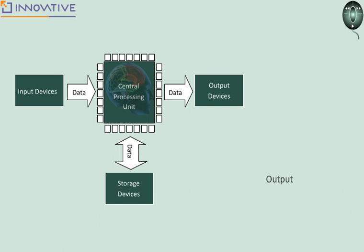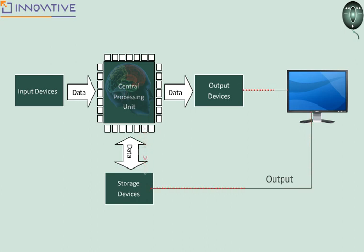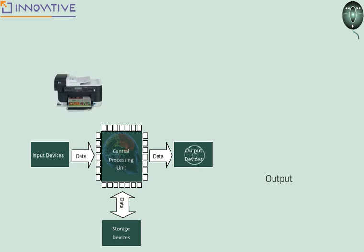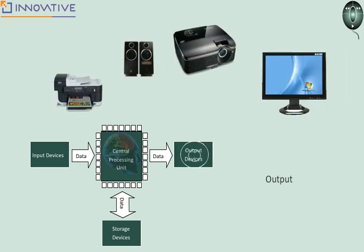Once data and instructions are processed by the processor, they are sent to the monitor, which usually acts as an output device, and also to the storage device for storing information. The monitor is just a display device and acts only as a canvas to show information retrieved from the temporary storage — the RAM. Likewise, the printer, speaker, and projector are also various output devices.